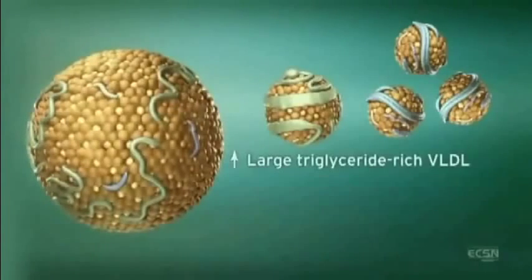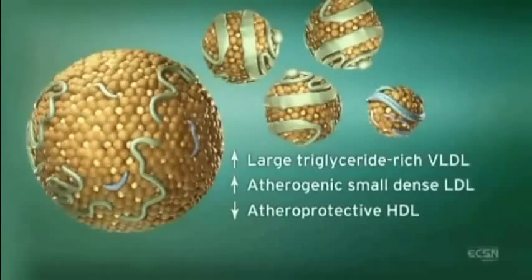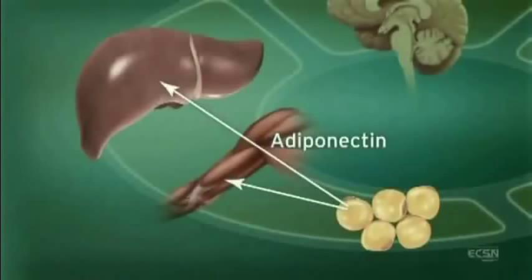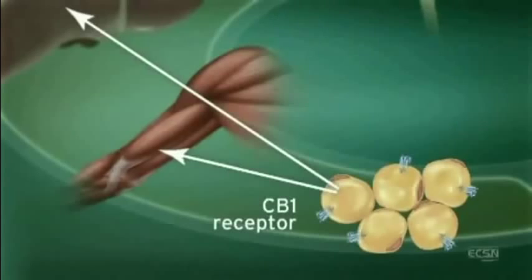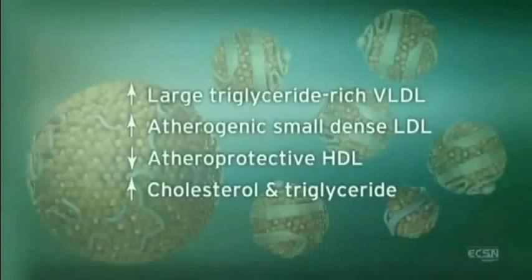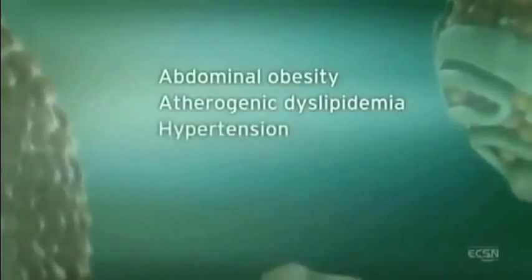Increased fatty acid synthesis can lead to production of large, triglyceride-rich VLDL. Large triglyceride-rich VLDL sets the stage for the atherogenic lipid profile of small dense LDL, decreased levels of atheroprotective HDL, and overall increases in cholesterol and triglyceride levels. Adiponectin, another hormone secreted by adipocytes, regulates lipid and glucose metabolism and is believed to regulate fatty acid oxidation in muscle and liver, improving insulin sensitivity. CB1 receptor stimulation in adipocytes reduces adiponectin, while CB1 blockade increases adiponectin synthesis.